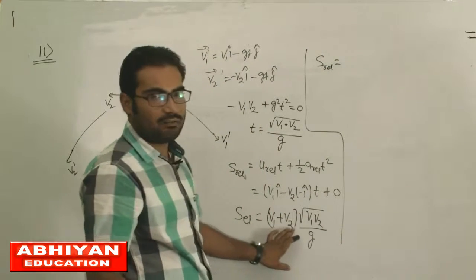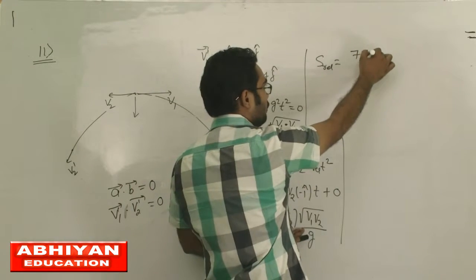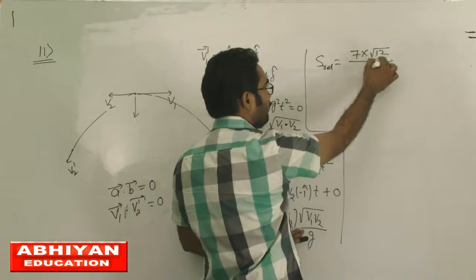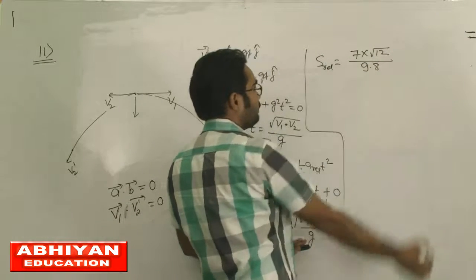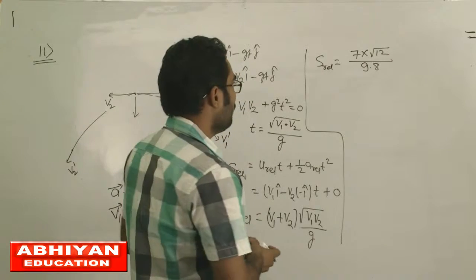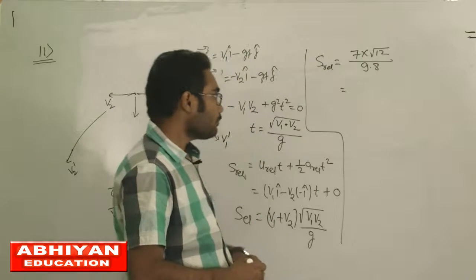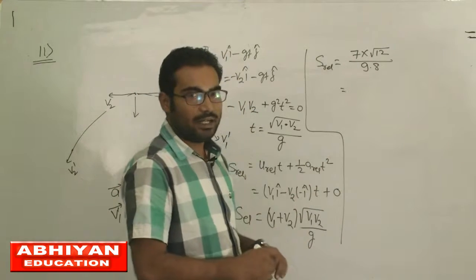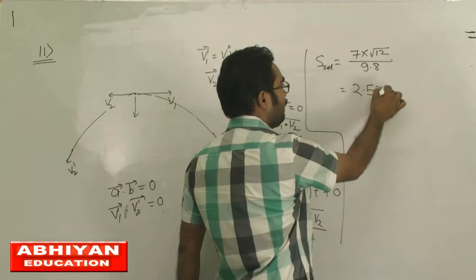To calculate this, the value is: V1 is given as 3, V2 is given as 4, so 7 into root 112 by 9.8. You can calculate this.